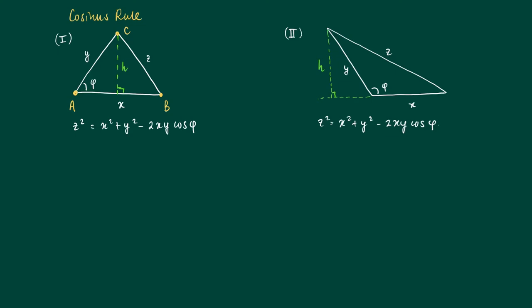The cosine rule shows a property of triangles. If we have two line segments AB and AC, they make an angle phi, then we know that Z squared, which is the opposite line segment CB, equals X squared plus Y squared minus 2XY cosine phi.